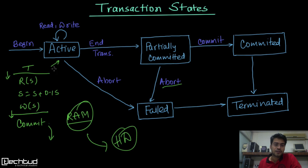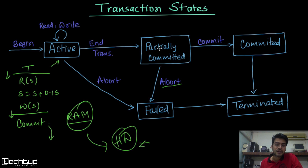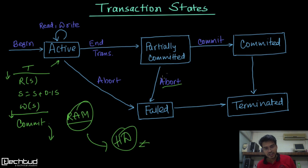To summarize: a transaction is active when performing its operations. Once operations complete, it moves to partially committed, where the value is in RAM but not yet on the hard disk. Once stored to the hard disk, it enters the committed stage and terminates automatically. A transaction can also fail — for example due to hardware failure after the partially committed stage — and will then be terminated as failed.